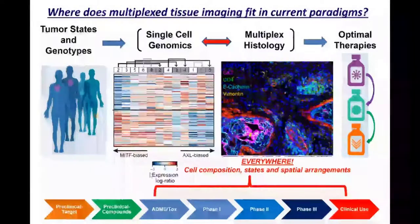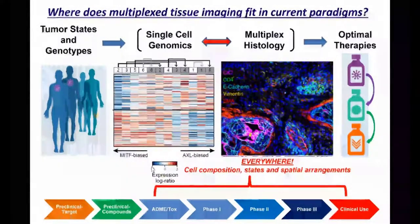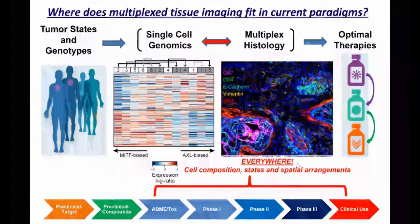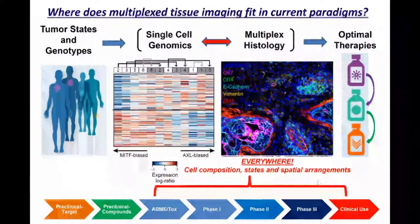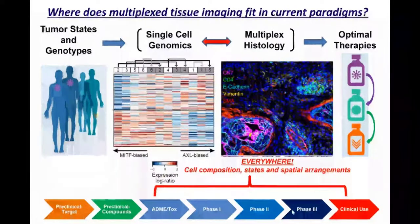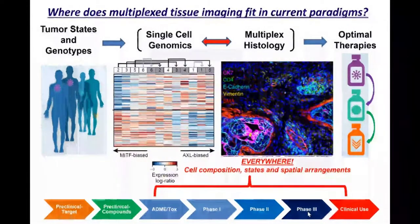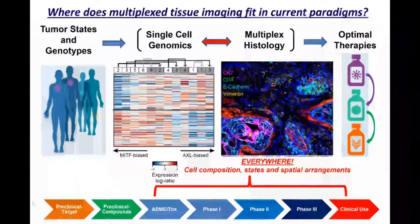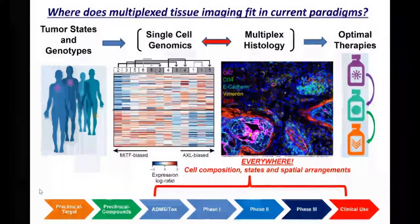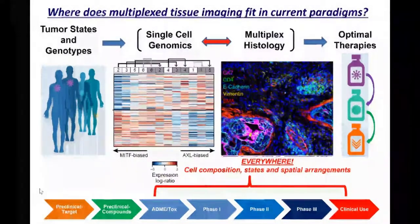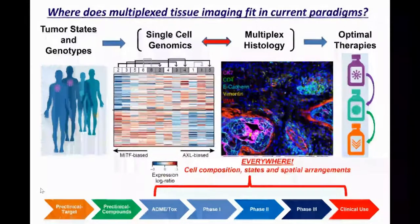So where does multiplexed tissue imaging fit in this paradigm? The more we think about this, the more we think everywhere. Understanding cell composition, cell states, and spatial arrangements will clearly have roles in clinical use, patient diagnostics, drug development for currently untreatable diseases, preclinical development, and — perhaps one of the more exciting areas — basic science discovery using human tissues for cell biology.